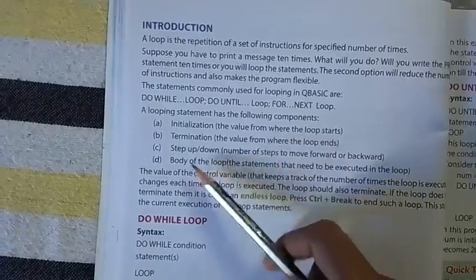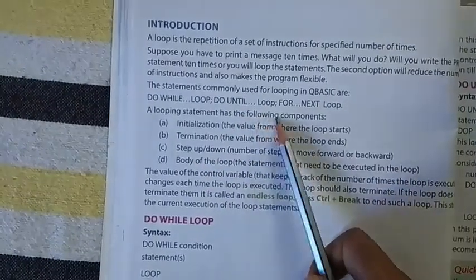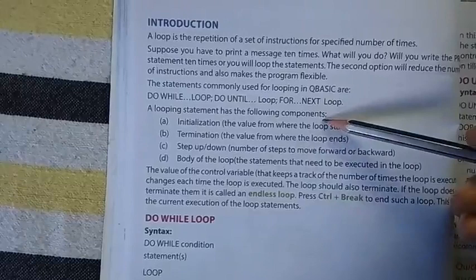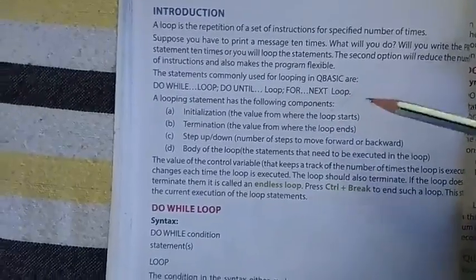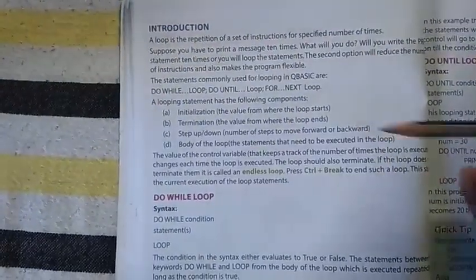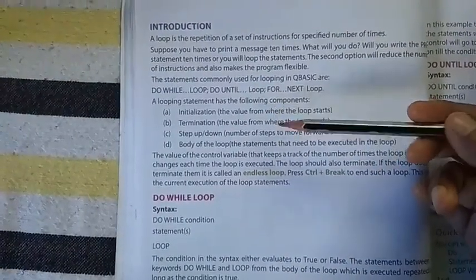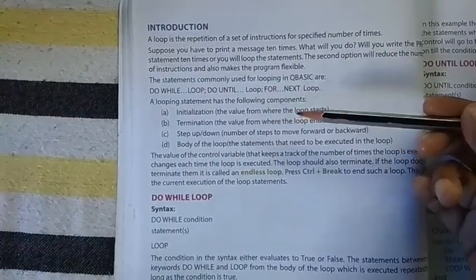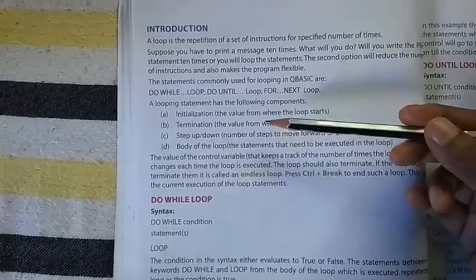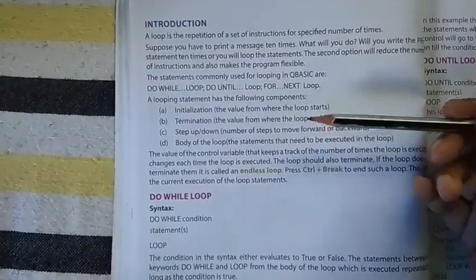A looping statement has the following components. You have to follow these components during execution time. What is initialization? Initialization is the value from where the loop starts. Termination is the value from where the loop ends.